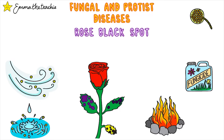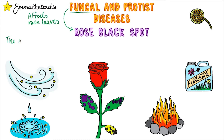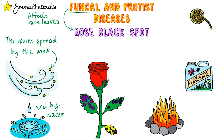Fungal diseases aren't that common in humans, with the exception of athlete's foot. They're much more common in plants. The one you need to know is rose black spot, which affects the leaves of roses. The spores of this fungus spread in the environment by wind and by water.